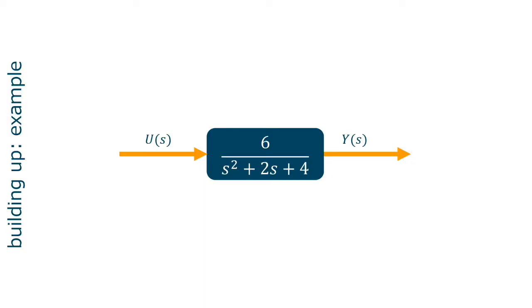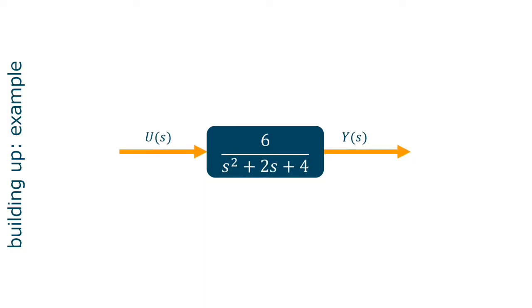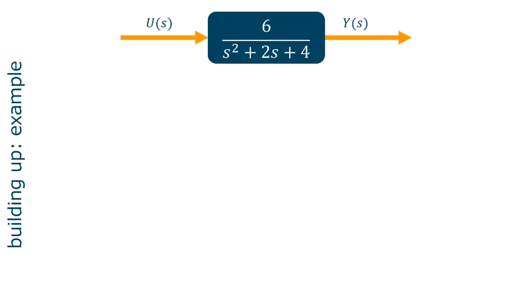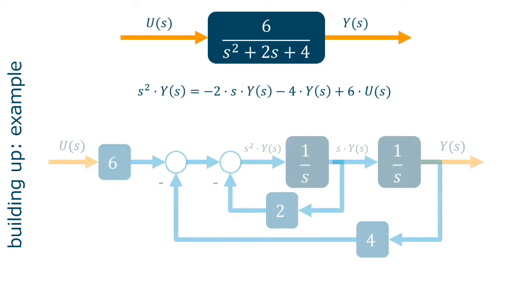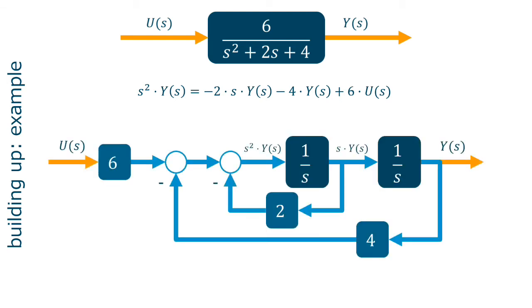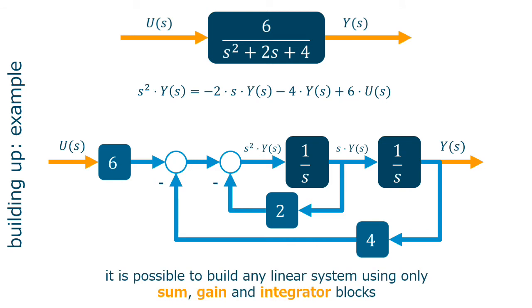Take this stable transfer function for example. From the function, we can write this relationship that can be drawn in a block diagram such as this. So, it is possible to build any linear system using only sum, gain and integrator blocks. Note that the sum and gain blocks are static. This means without dynamic.